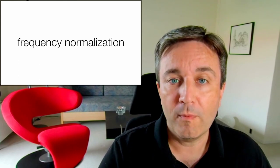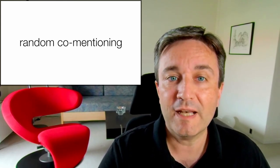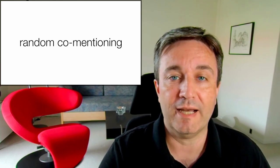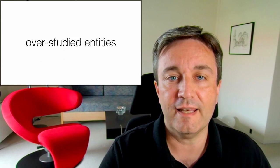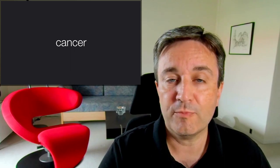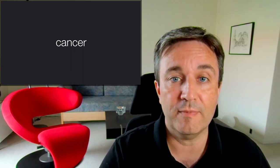Then we normalize for the frequency. That is, we look at how often they are co-mentioned compared to what you would expect by random chance. This is to correct for overstudied entities such as the gene TP53 or the disease cancer, as these appear very often in the literature and can therefore also at random have quite many co-mentions.